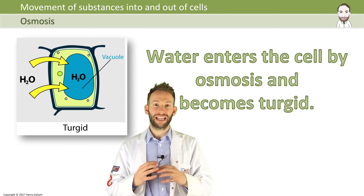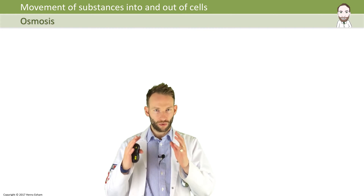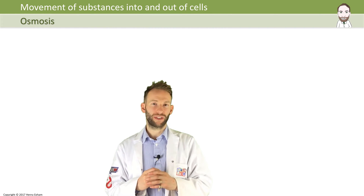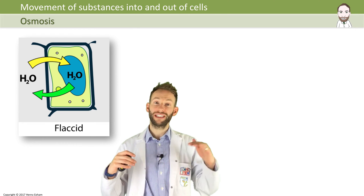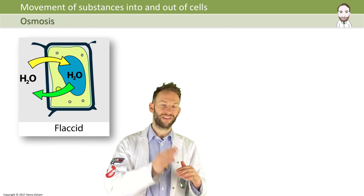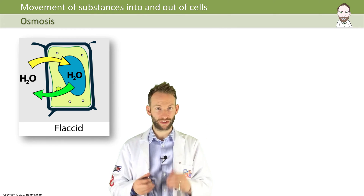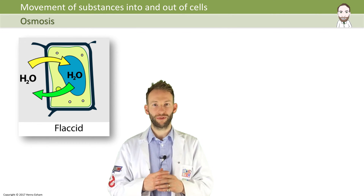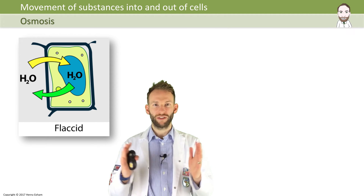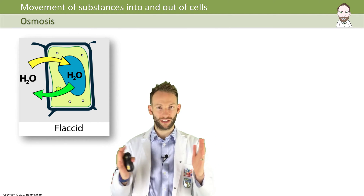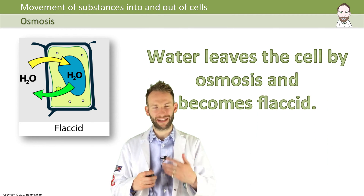If you put a plant cell in a more concentrated solution, then it's likely that water will move out because the inside of the cell now has a higher water potential than the outside. So water is going to move out of the cell. You might get a bit going both ways, depending on the precise concentration of the solution. But the cell membrane will probably not be pushing on the cell wall quite so hard because there's less water inside now. We say that the cell is becoming flaccid.